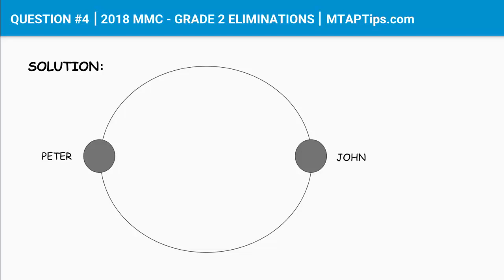Now, to the left of Peter, between Peter and John, there are five children. So let's add 1, 2, 3, 4, 5. There are five children to the left of Peter, which is between Peter and John.